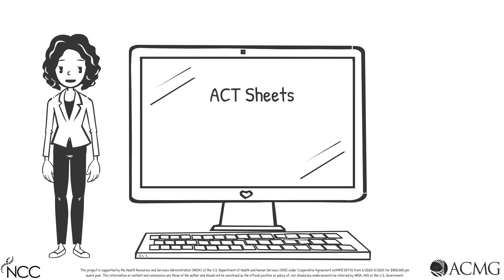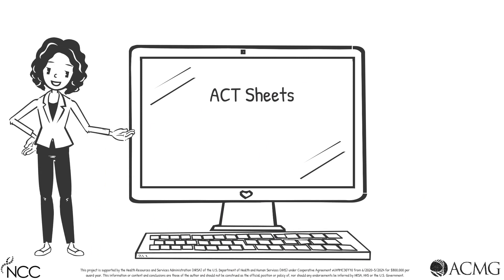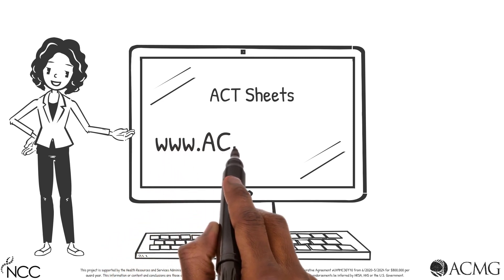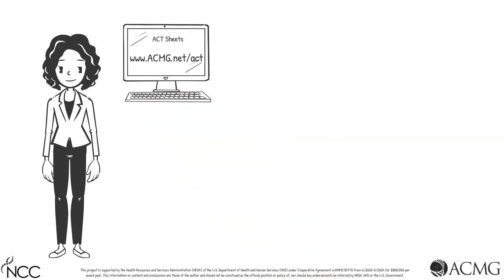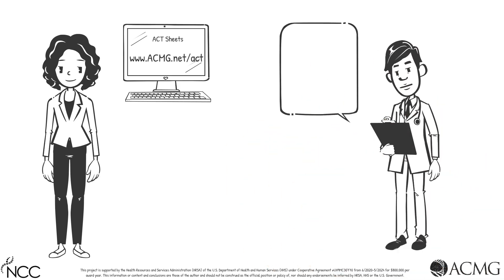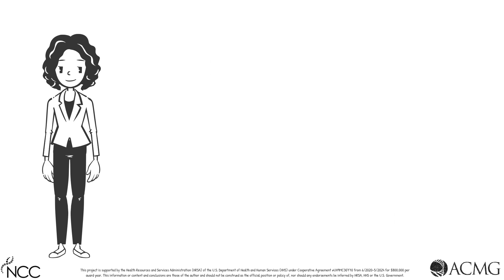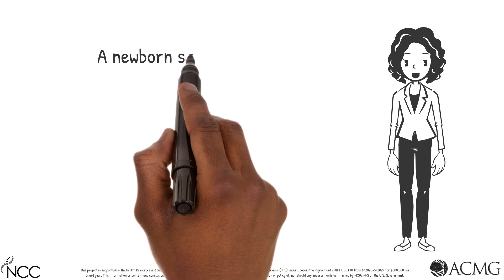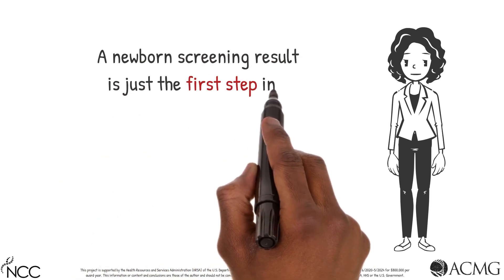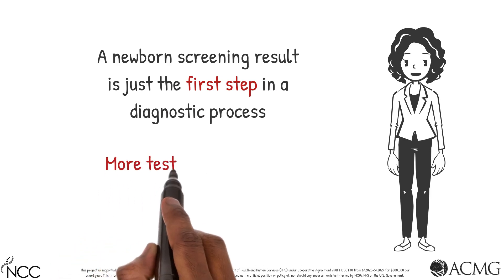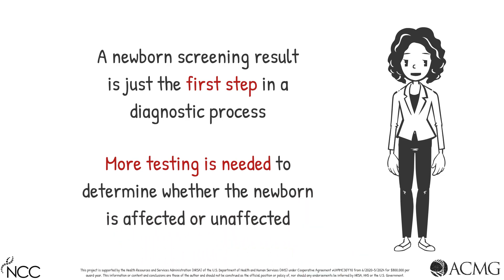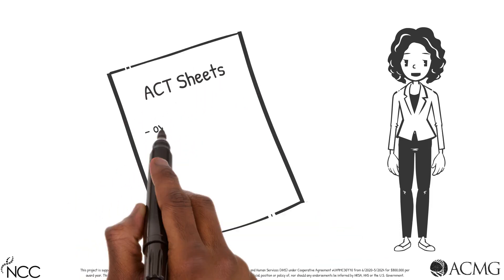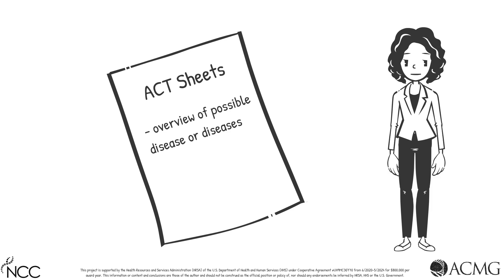This session is a companion to the PAH deficiency Act Sheet, which is freely available at www.acmg.net. Act Sheets are intended to be immediate resources for providers who encounter positive newborn screening results. A newborn screening result is just the first step in the diagnostic process. Further testing and evaluations are needed to determine if the newborn has the disease — a true positive result — or is unaffected, a false positive result. The Act Sheets provide an overview of diseases identified by newborn screening and clear next steps for management of a positive result.